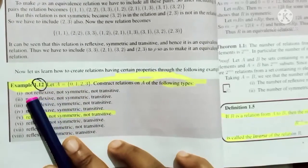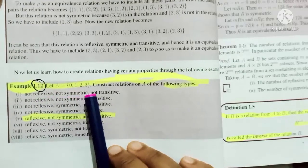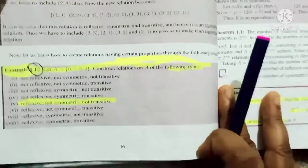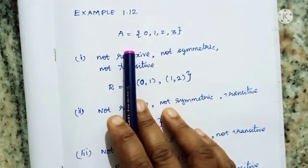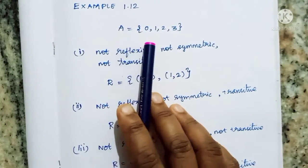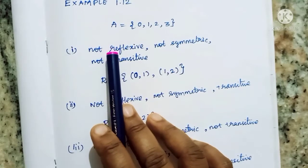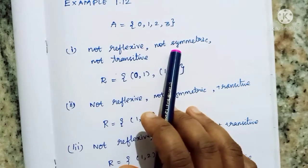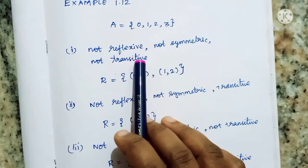The first subdivision is: not reflexive, not symmetric, not transitive. Given set A = {0, 1, 2, 3}. So the first subdivision requires us to construct a relation that is reflexive, symmetric, and transitive — let's verify each property.